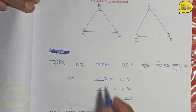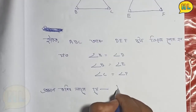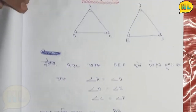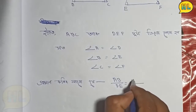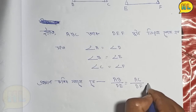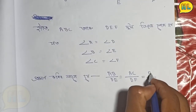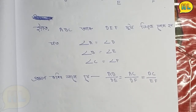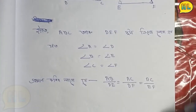This is what we call A B by D E, A B by D E, A C by D F, A C by D F, B C by E F, this is what we call A B C by E F. Make it similar to this.